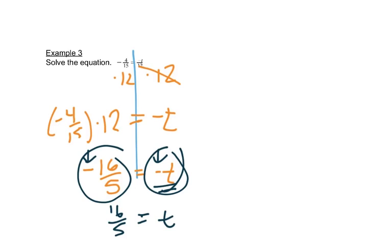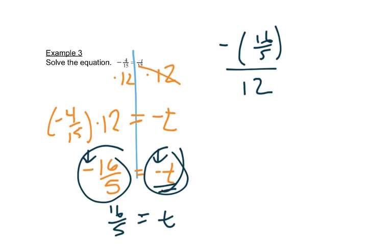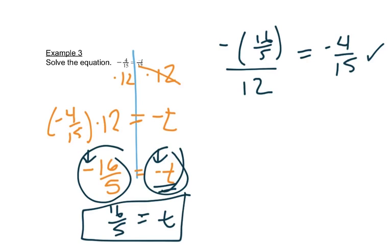Again, I can check that. If I take 16/5 in place of T and divide by 12, I can do that in my calculator. I get negative 4/15, so it works — it checks. This is my answer.